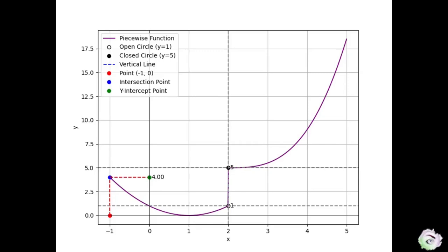To find the corresponding y coordinate, let's draw a horizontal line from the blue point to the y axis. Mark the point where the line meets the axis with the green dot. The value of the y coordinate is shown next to the green dot.